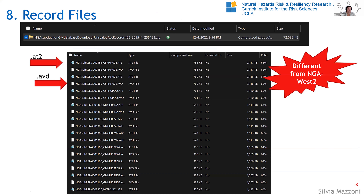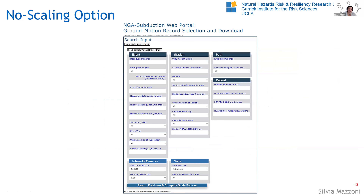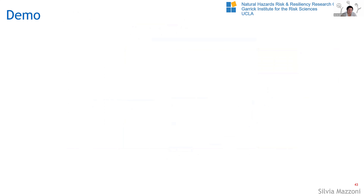You'll see a zip file that has AT2 files and AVD files. You can open the AVD files in Excel and visualize them more easily because you've got time, acceleration, velocity, and displacement in columns. There's also the 'no scaling' option — if you're looking for individual records, you go in, select no scaling, and you don't see anything about the target spectrum, just the scaling options.